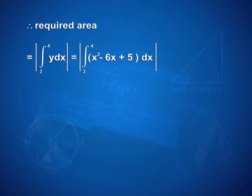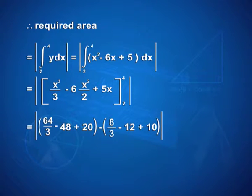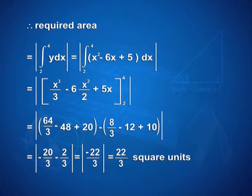That gives |[x³/3 − 3x² + 5x] with limits 2 and 4|, which equals |64/3 − 48 + 20 − 8/3 + 12 − 10|, that is |−20/3 − 2/3| = |−22/3|, giving 22/3 square units.